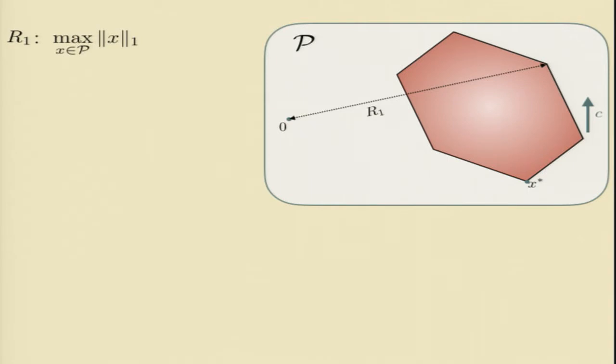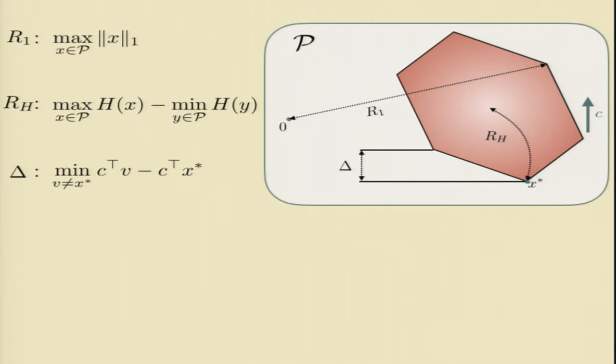There's also this sort of entropic radius, which measures the gap in entropies between points in your polytope. So far, so good. The other thing that shows up is this slightly more troubling-looking quantity,